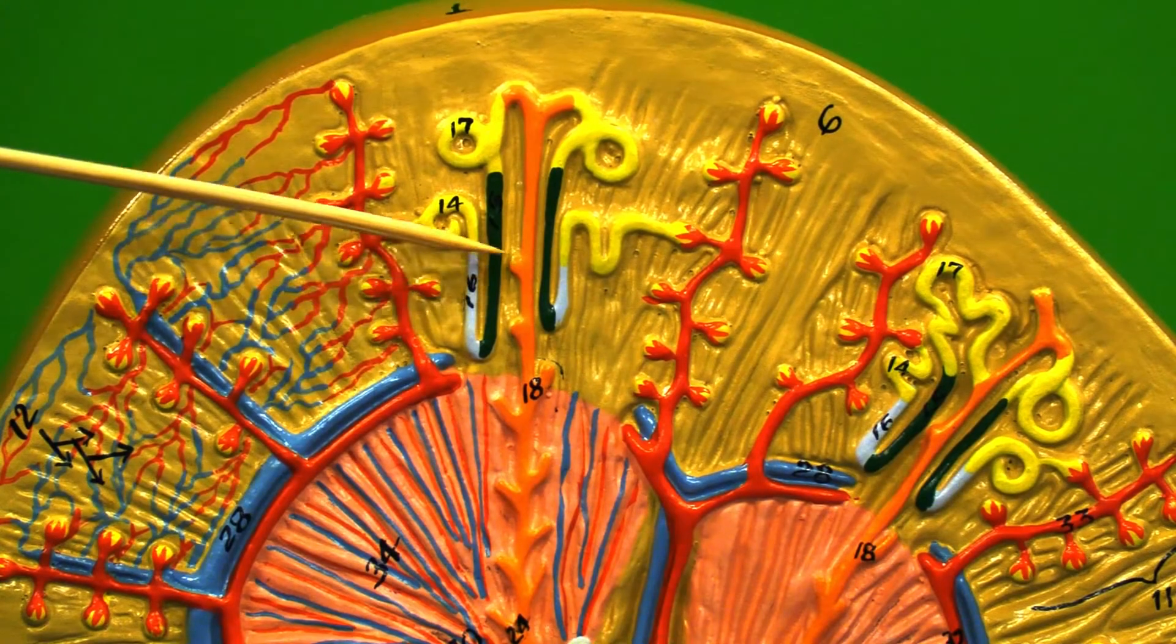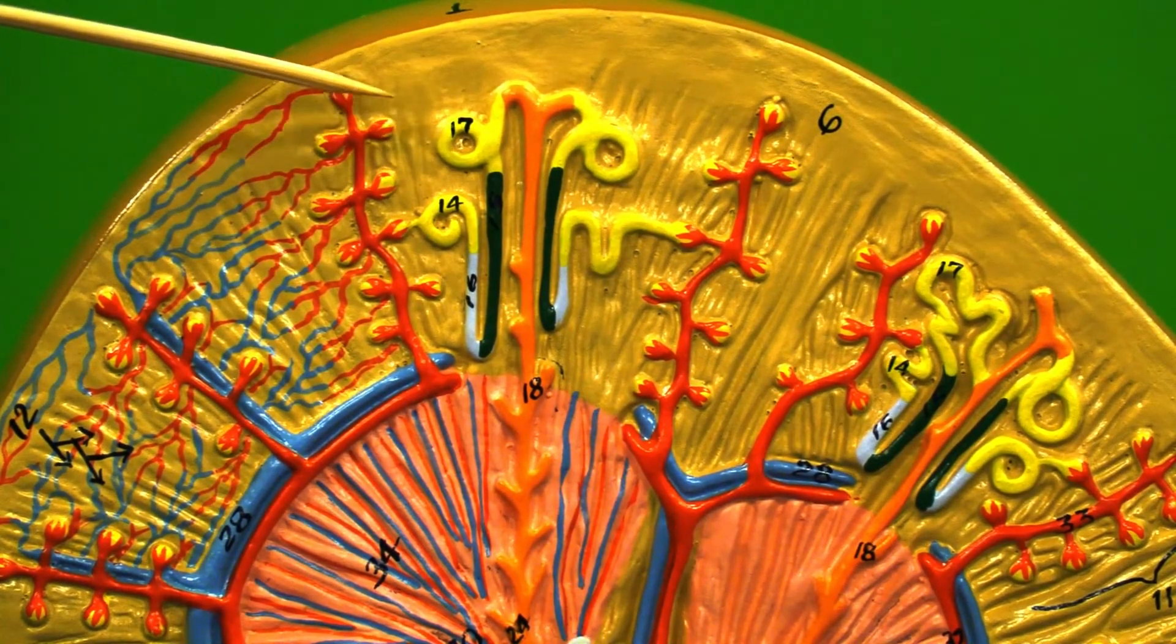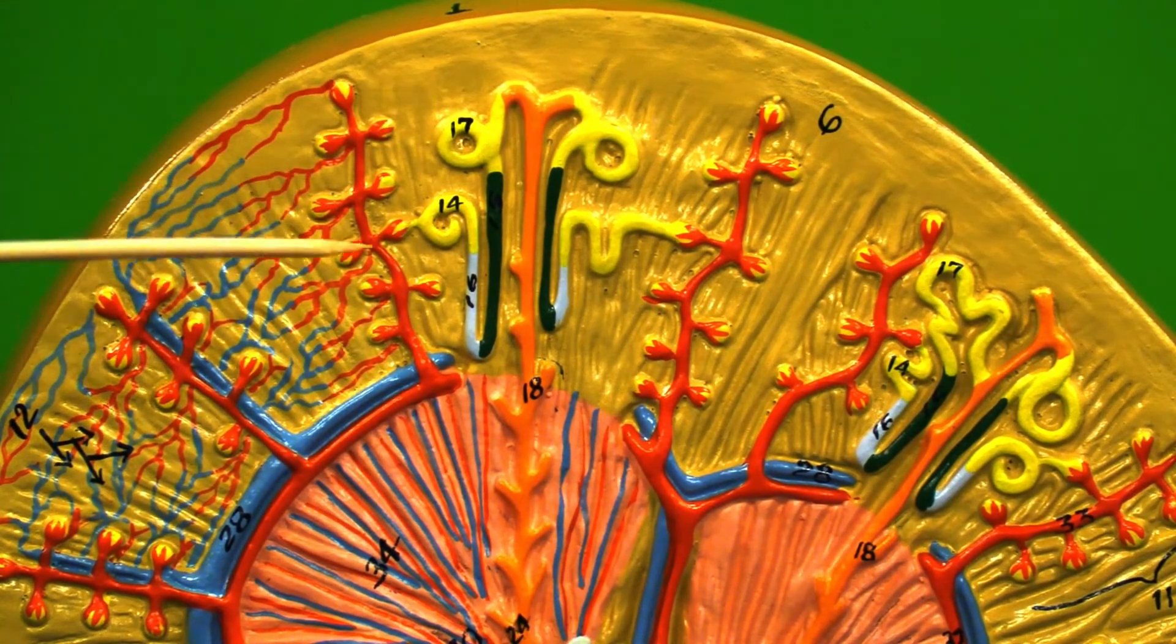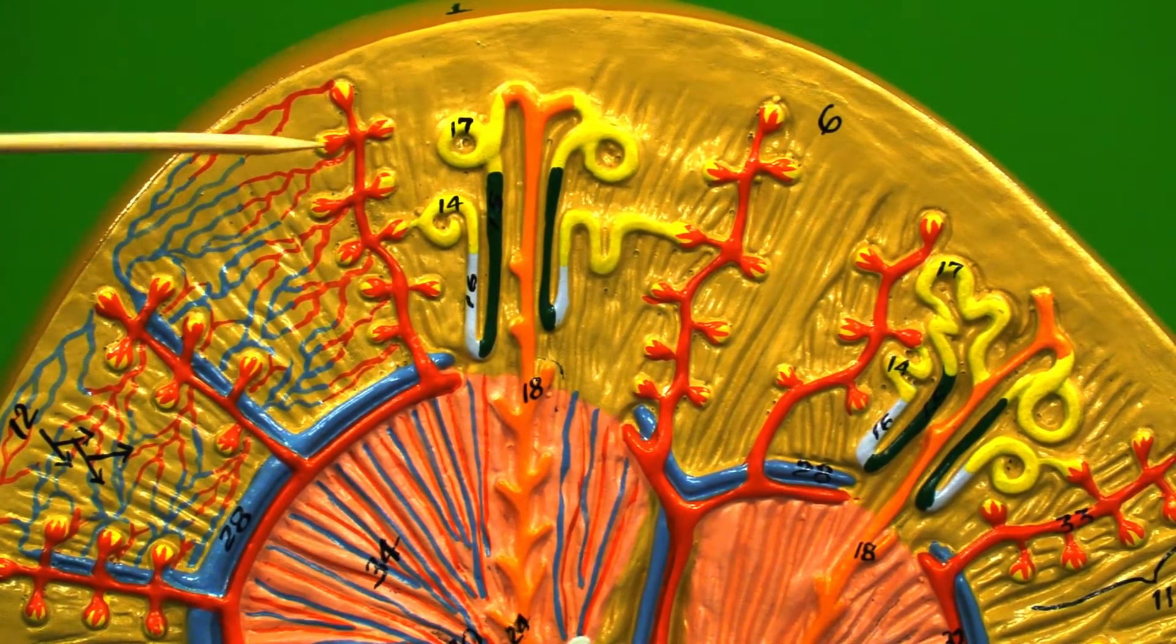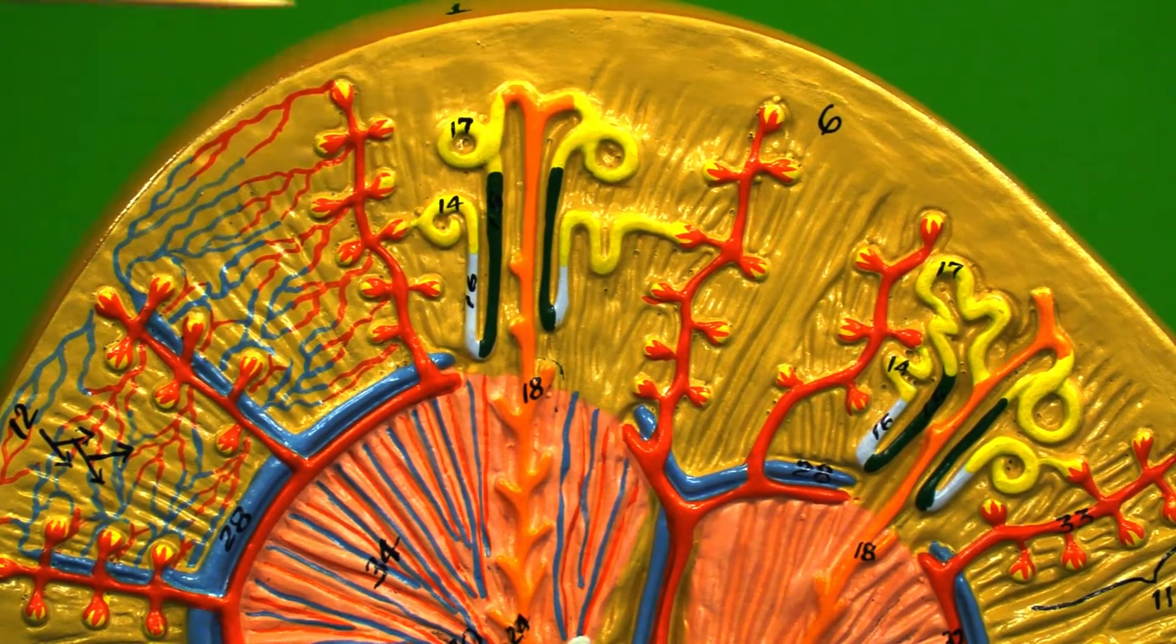After the loop of Henle we come into another twisty section which is called the distal convoluted tubule. It again filters out many of the substances that are in there, including your last chance to filter out calcium due to the parathyroid hormone.